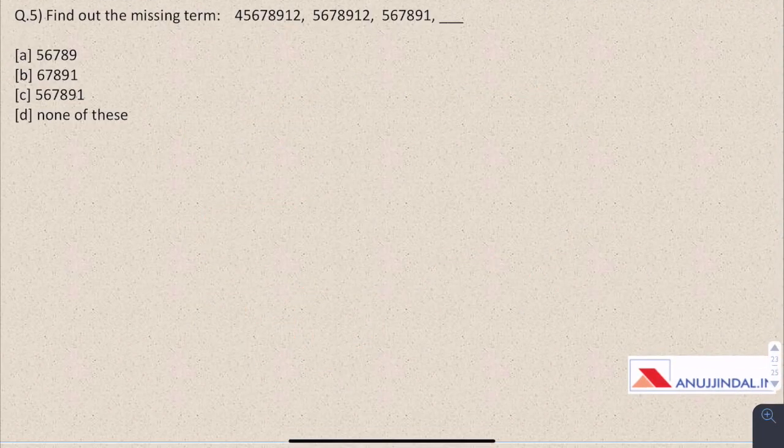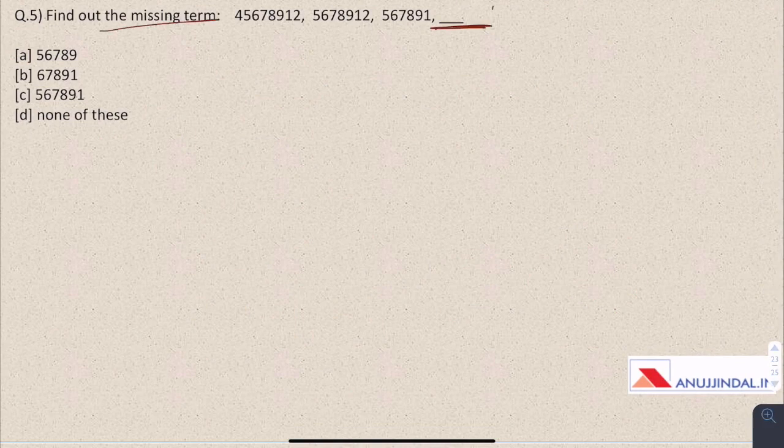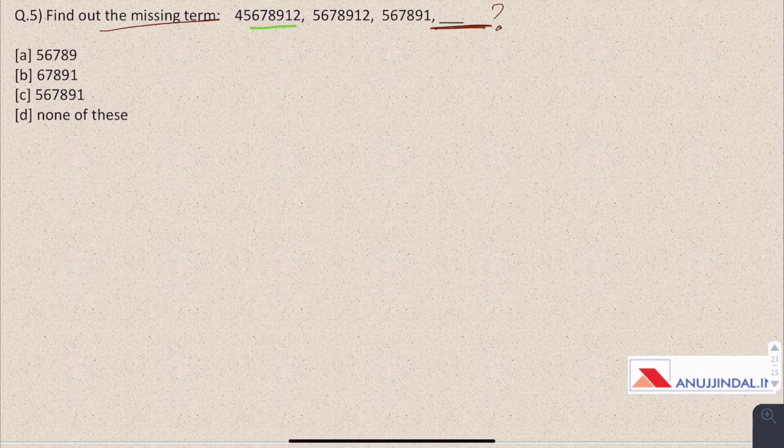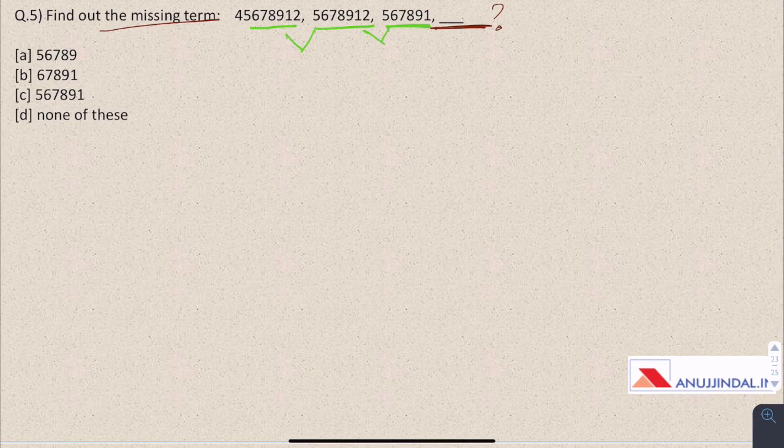Question 5: find out the missing term. Here missing term is nothing but the next number in the sequence. So look at these numbers closely—finding the difference between the two numbers technique doesn't always work in every question. Here you have been given greater numbers.